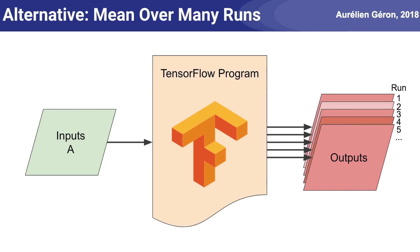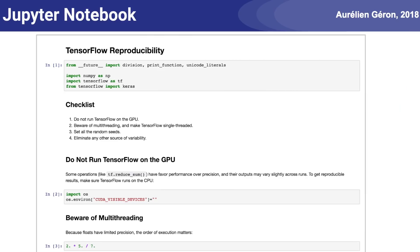In fact, you will learn more about your deep learning model if you train it multiple times rather than just once. You can measure its performance at each run and compute the mean and standard deviation. This will give you a better idea of how good or bad your model really is, and also how stable it is during training. If you notice that the performance varies a lot, you should probably try to fix that — for example by checking for signs of overfitting, maybe adding some regularization like dropout or batch normalization. I've created a Jupyter notebook to demonstrate how to write reproducible code in TensorFlow — the link is in the video description.